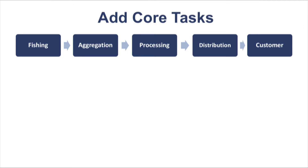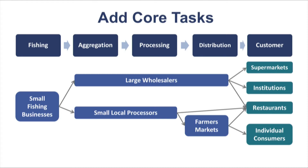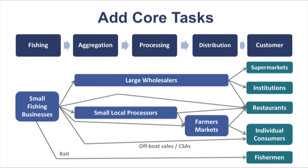Now that a basic flow chart is in place, you can start mapping the market players from your inventory according to their roles. We will start with players from the core chain. We are focusing on small fishing businesses and their crew, so we will place them on the map under the fishing task. Then we can trace the path of the products all the way to the end users. Next, there are the large wholesalers and small local processors. These two types of value chain players then sell to a number of retail outlets who sell to a number of different end users. There are also some direct linkages between small fishing businesses and customers, and bait that is sold from fishermen directly to other fishermen. Your diagrams will likely become messy quite quickly as you uncover all of the different pathways that products take and the many different players who touch it in one way or another.